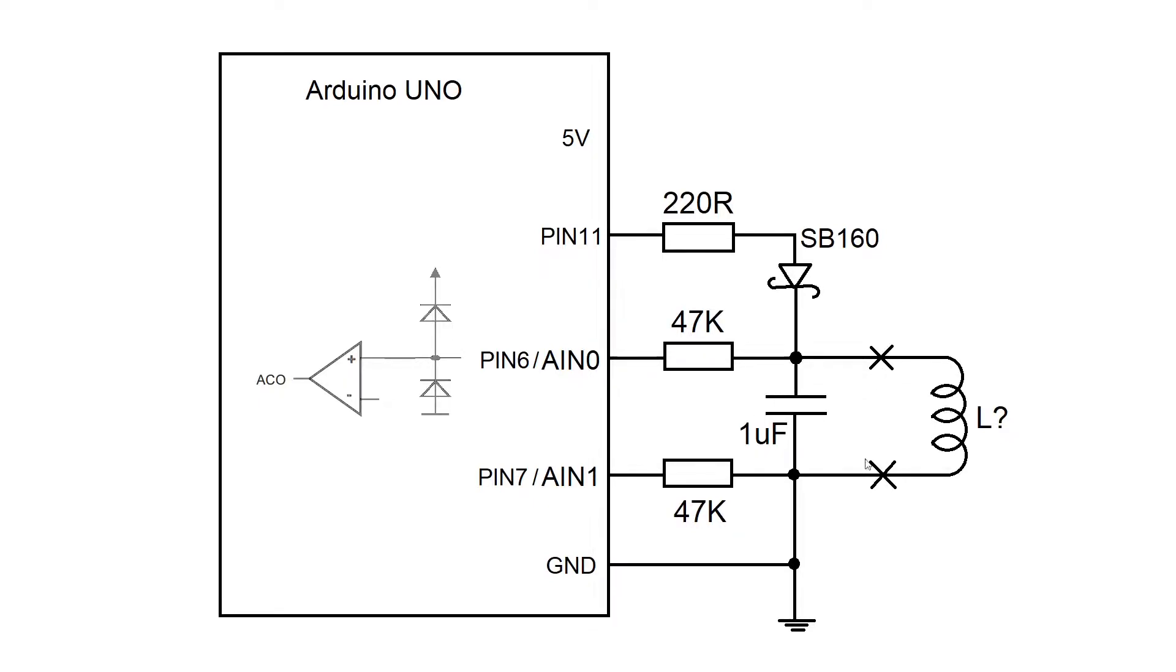And we can measure the period of that oscillation with an Arduino. When pin 11 goes high, this 220 ohm resistor limits the current through the inductor.